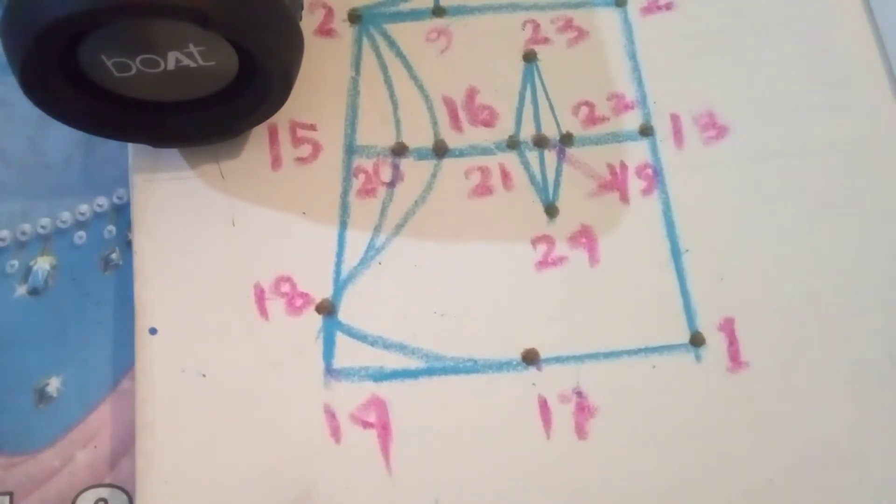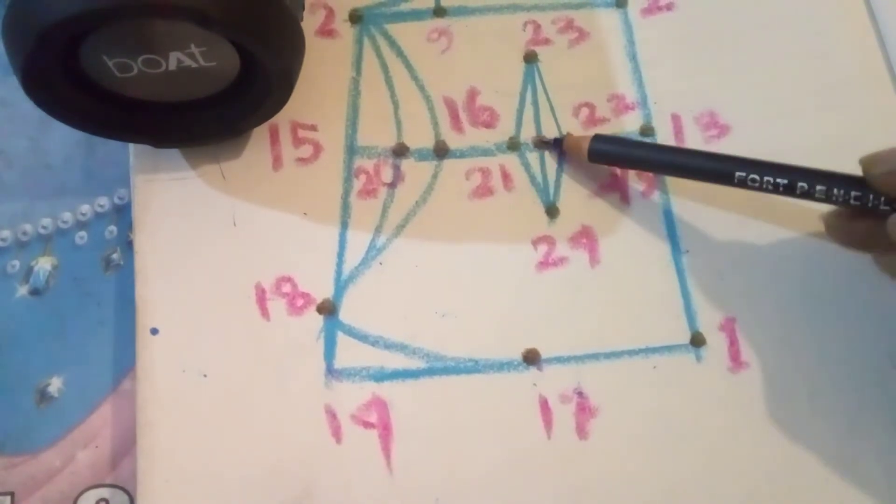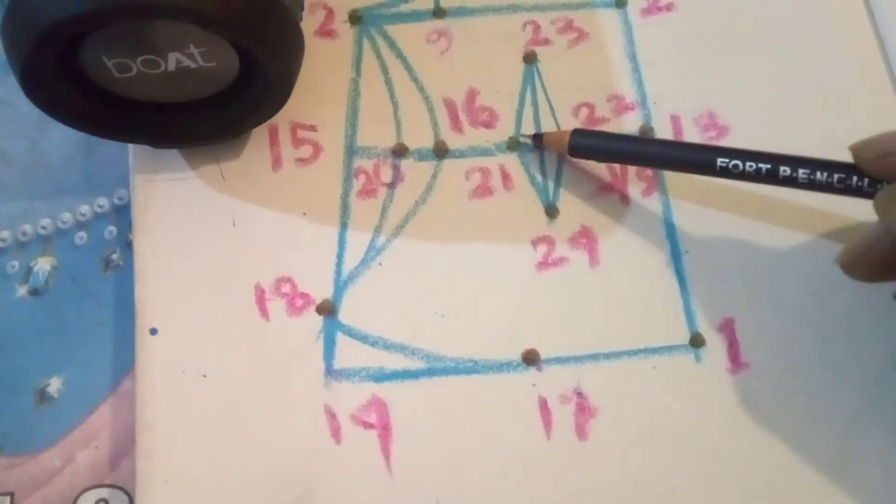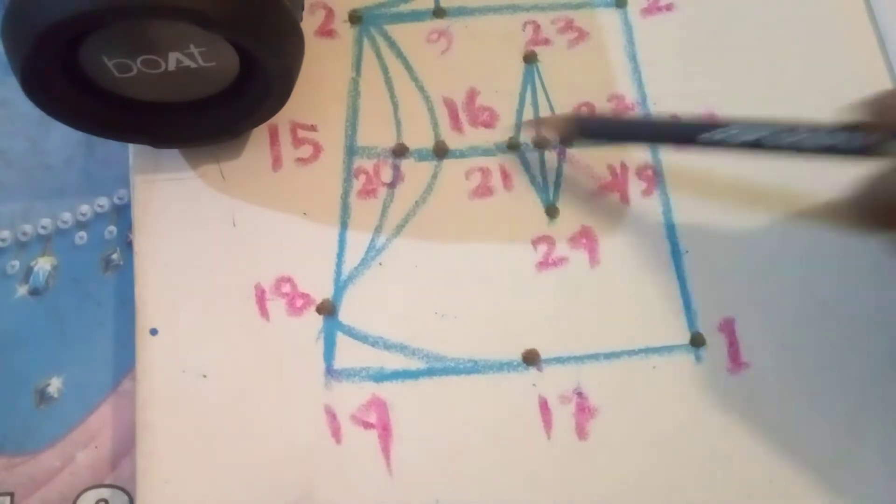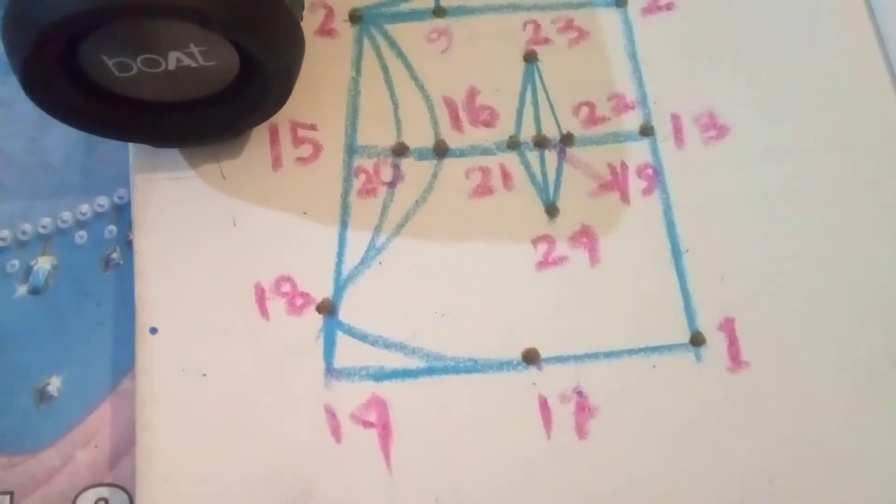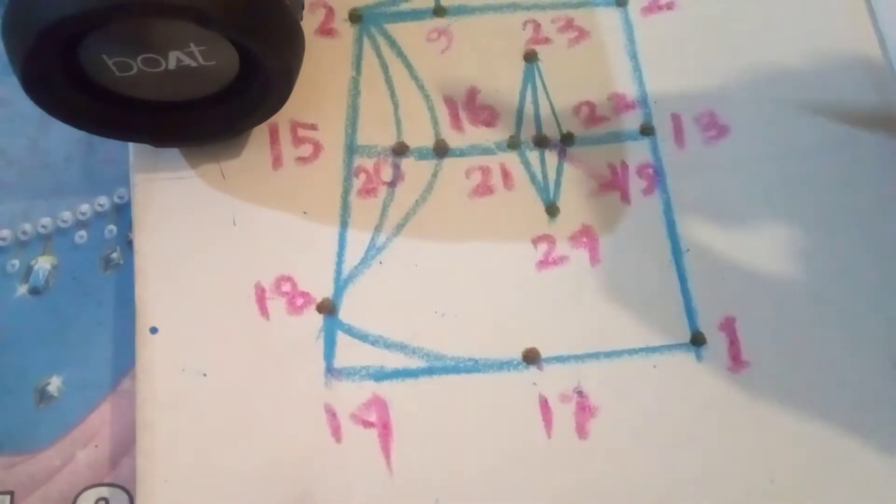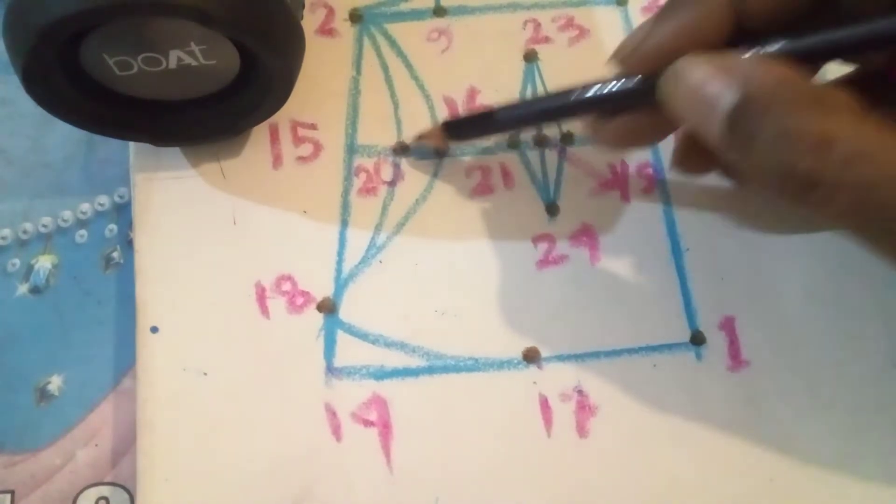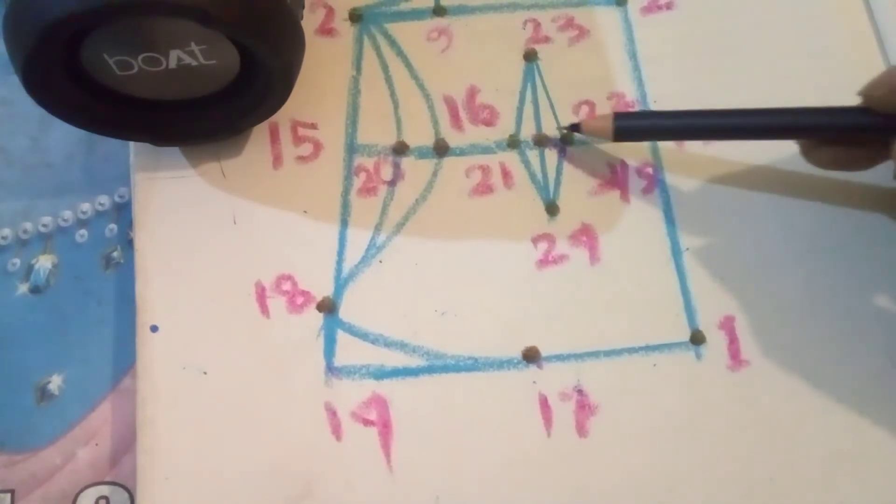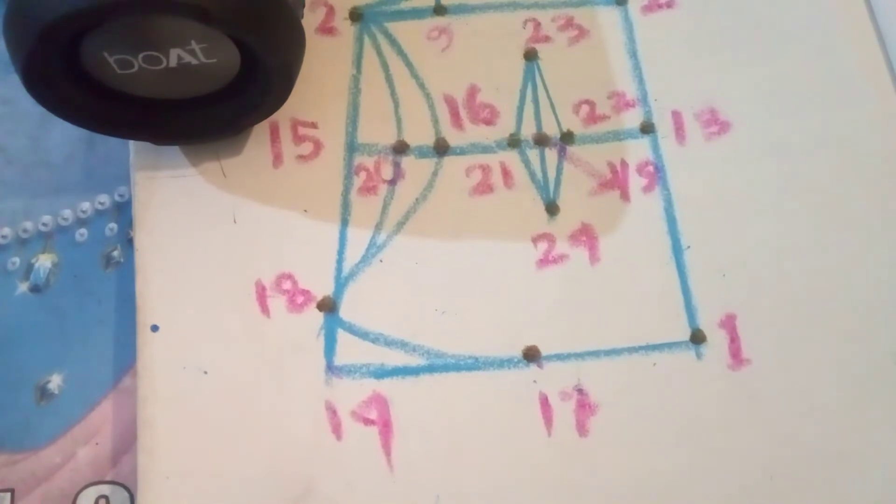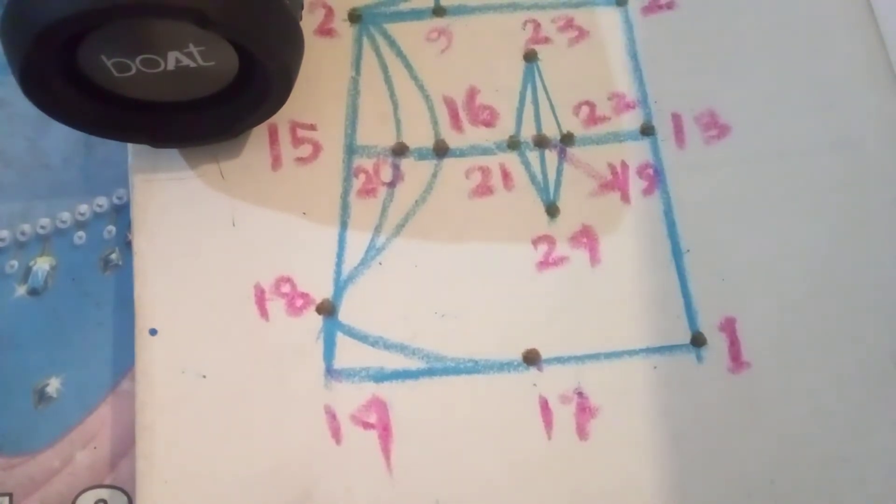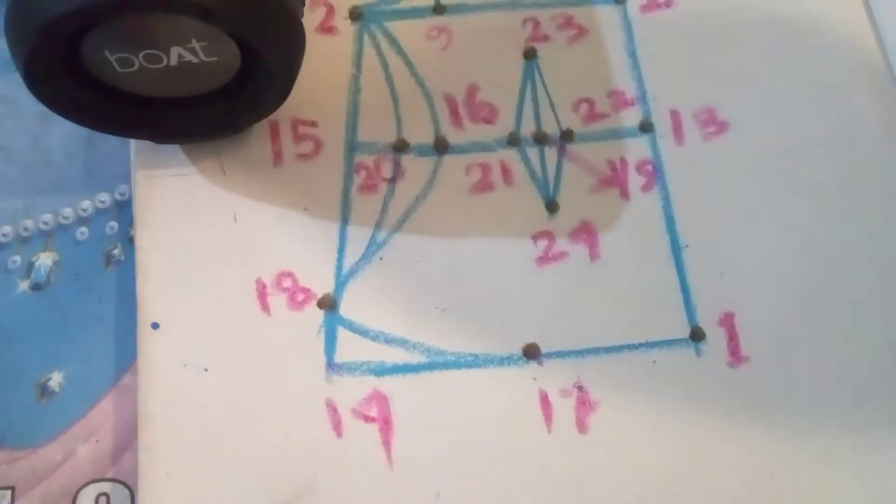Next point, write down 19 to 21. What is 19? This is 19, 19 to 21. Write down 19 to 21. Half of 16 to 20. 19 to 21 is equal to half of 16 to 20.